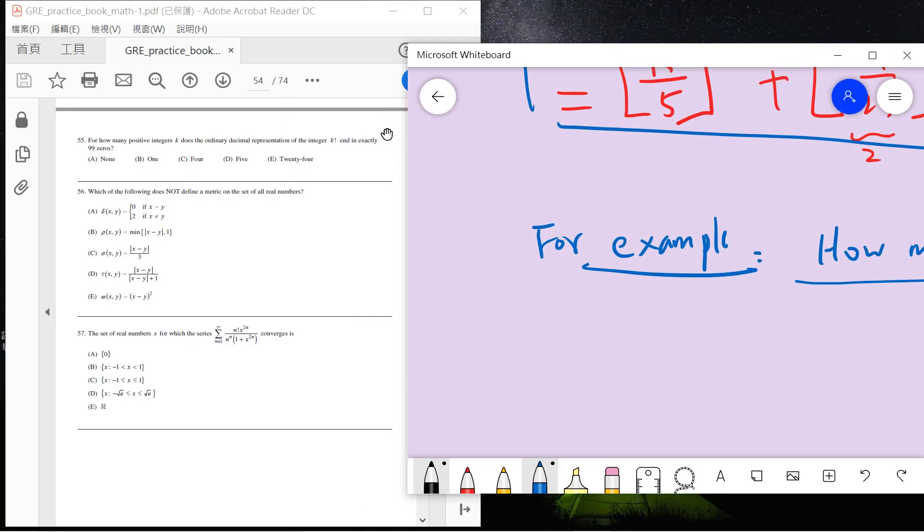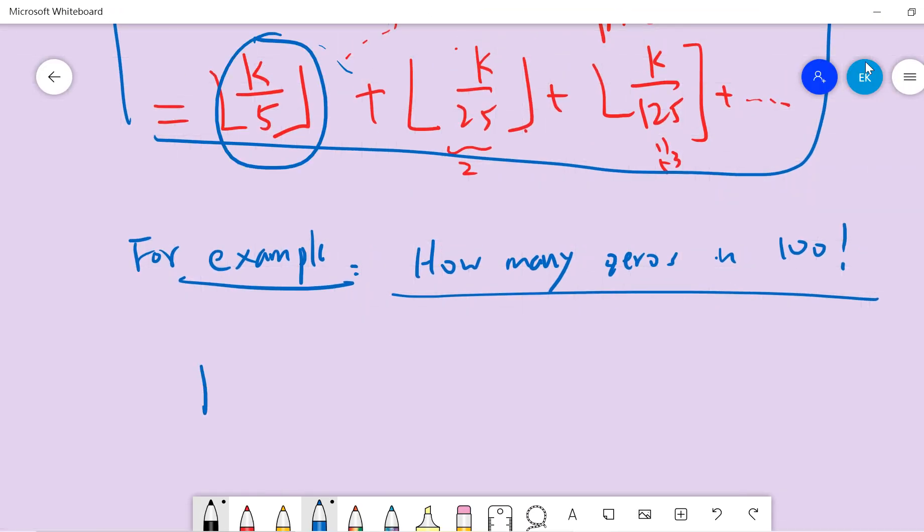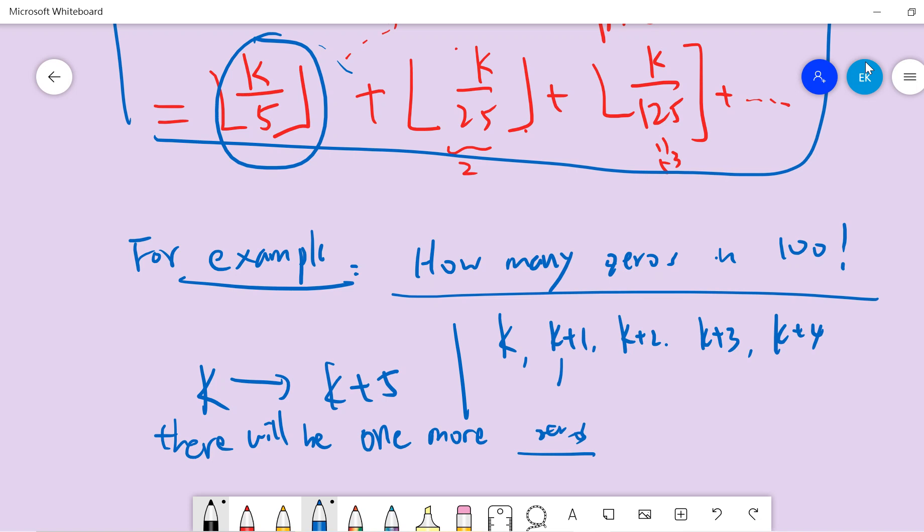How many positive integers k have k factorial with exactly 99 zeros? If k goes to k plus 5, then there will be one more zero. That means k, k plus 1, k plus 2, k plus 3, k plus 4 all have exactly the same number of zeros.